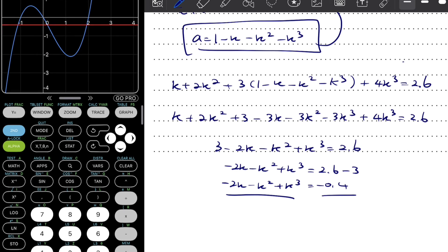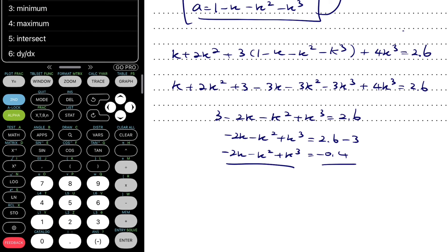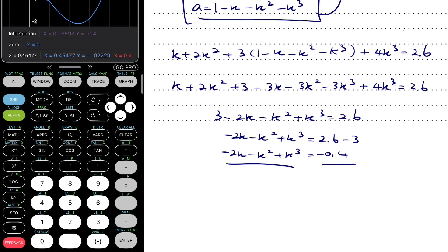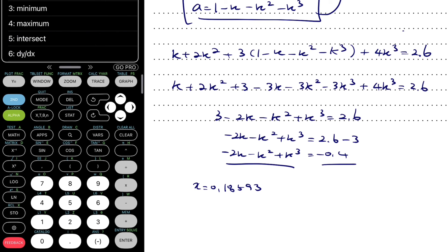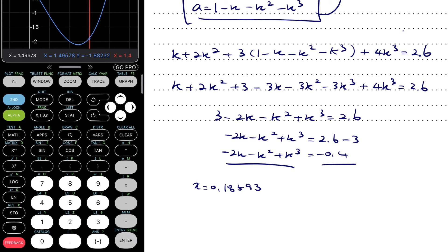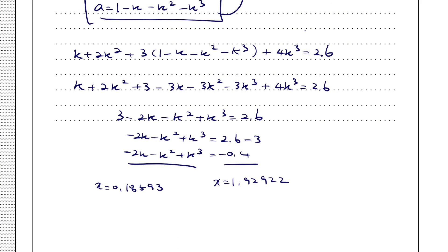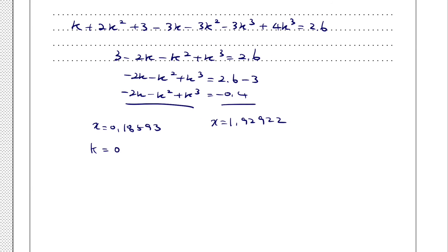You can see that there are two intersections. We can calculate the intersections and find our first intersection point as 0.18593 and the second intersection point as 1.92922. You can see that both x values are actually k values, so we can rewrite this as k equals 0.18593 or k equals 1.92922. Both of them are still positive real numbers.